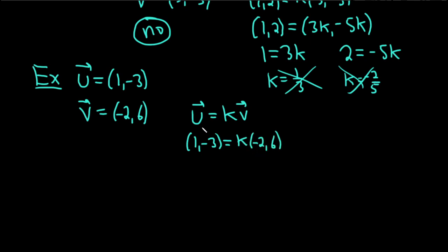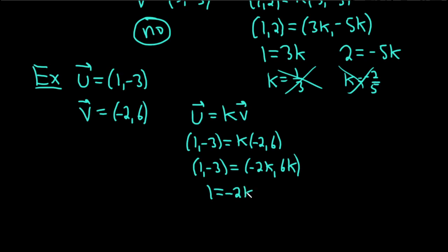So u is (1, negative 3) and then we have k times (negative 2, 6). Distributing the k gives us (negative 2k, 6k). Two vectors are equal when their components are the same, so 1 equals negative 2k, and negative 3 equals 6k. Dividing by negative 2 gives k equals negative 1/2. Dividing by 6 gives k equals negative 3/6, which is the same as negative 1/2.